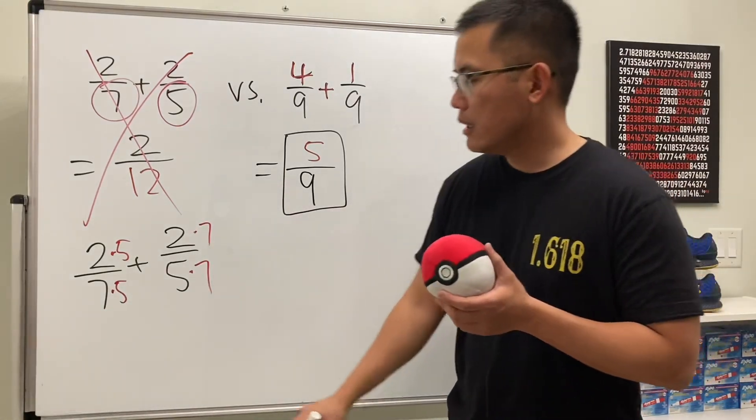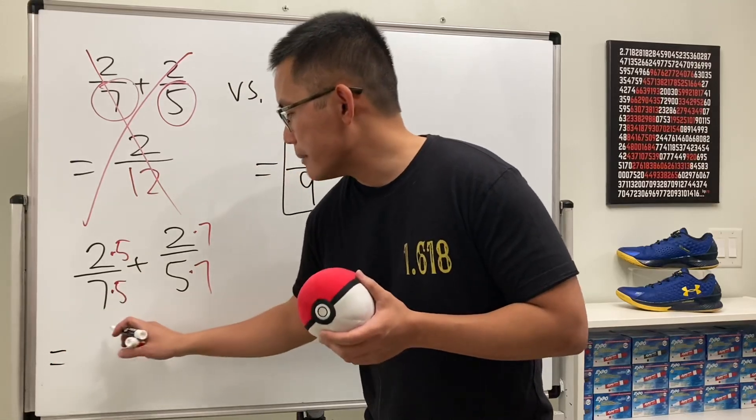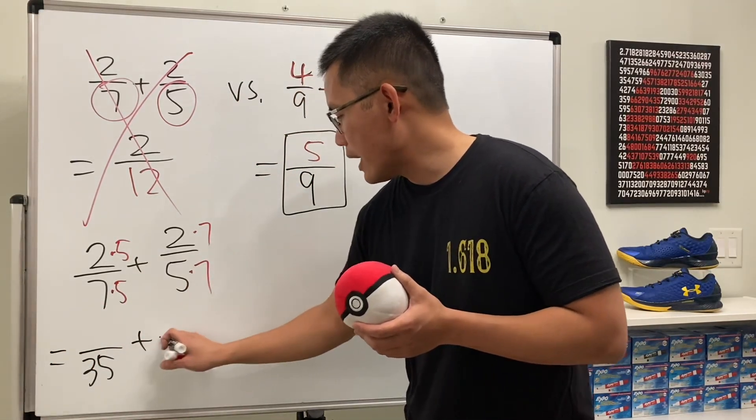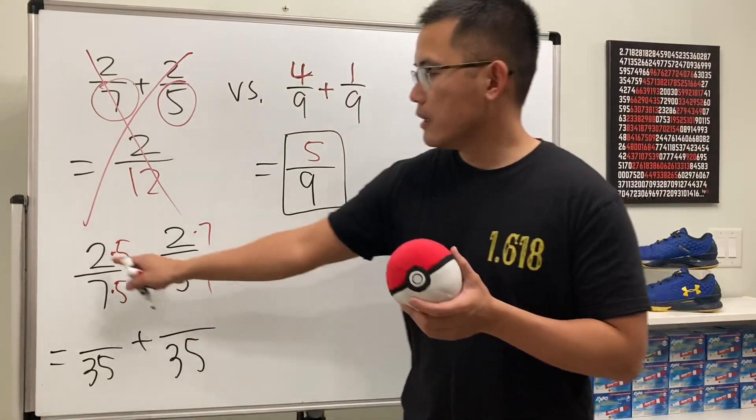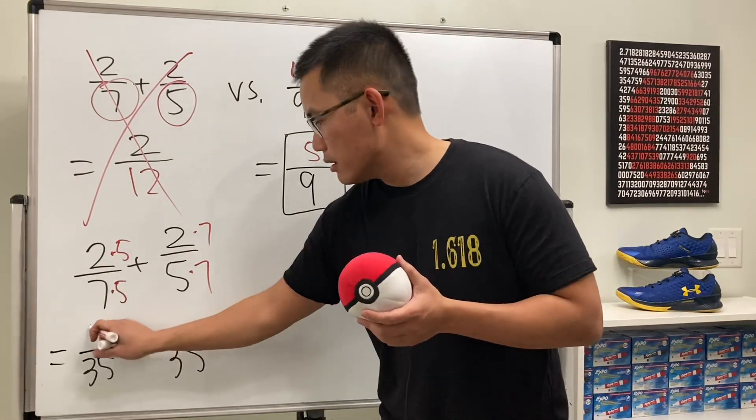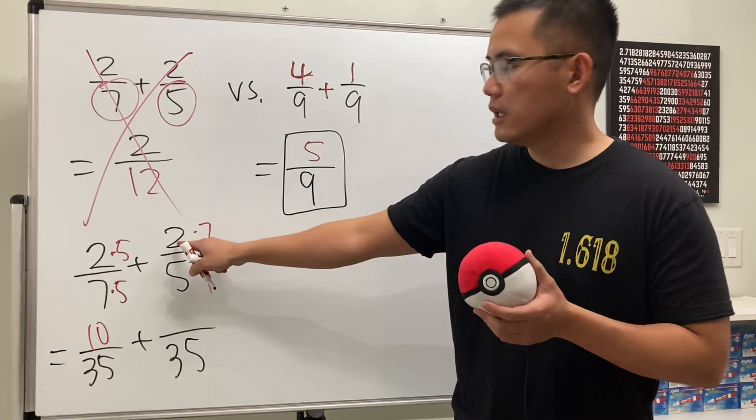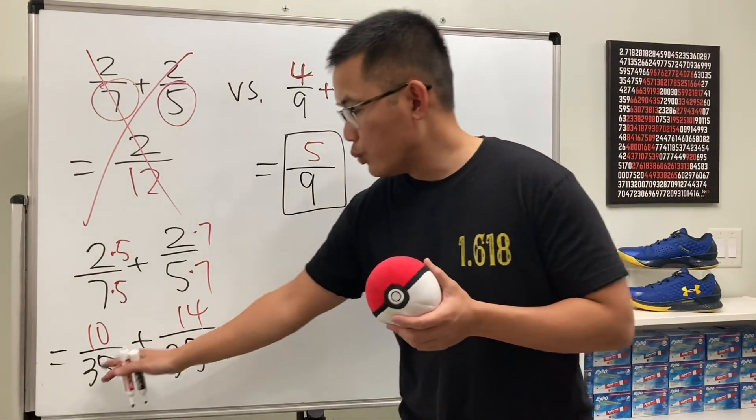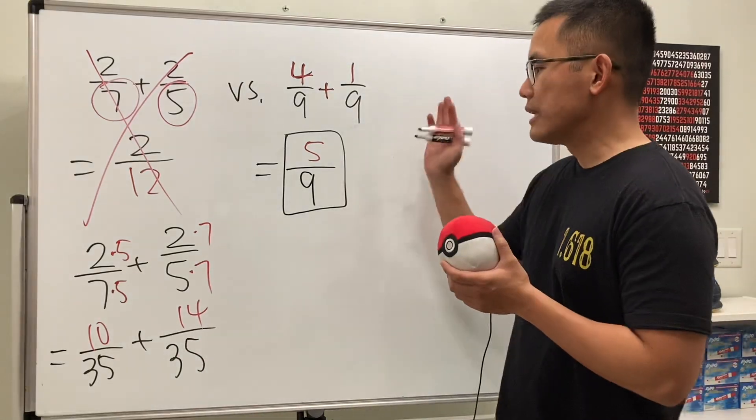Now 5 times 7 or 7 times 5, we get 35. And then for the other one, this is also 35. 2 times 5 is 10. Now we can do, and then likewise, 2 times 7 is 14. And now you see we have the same denominator.